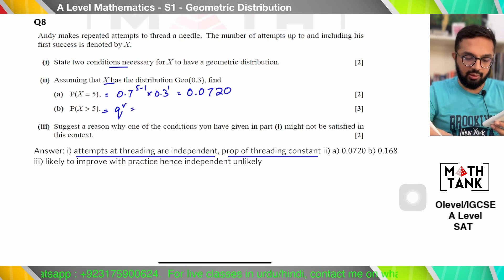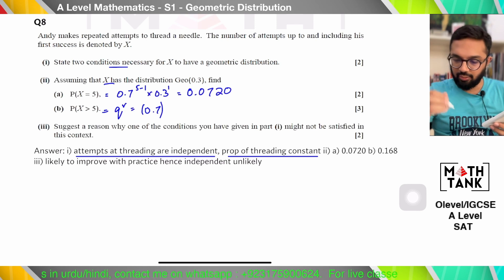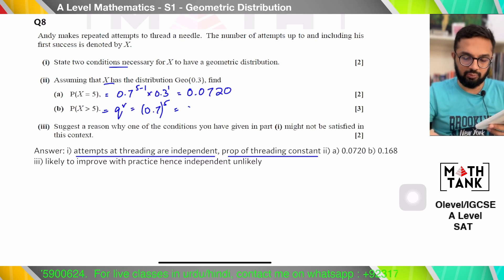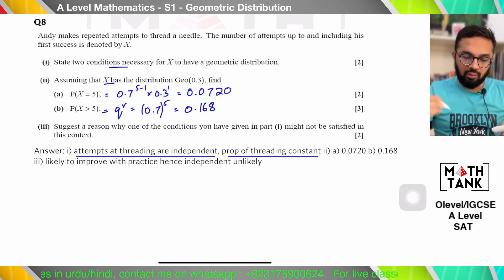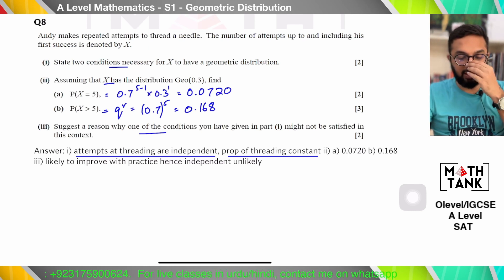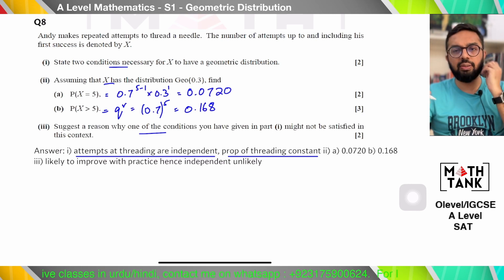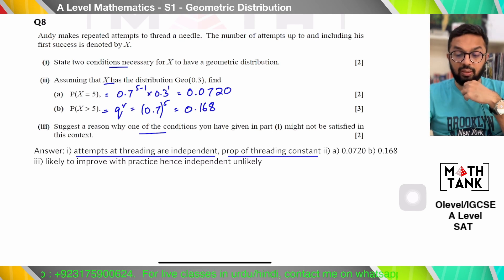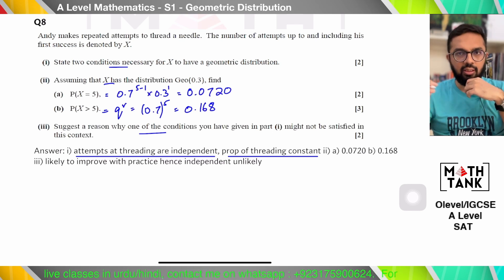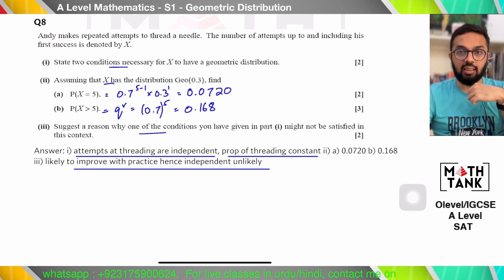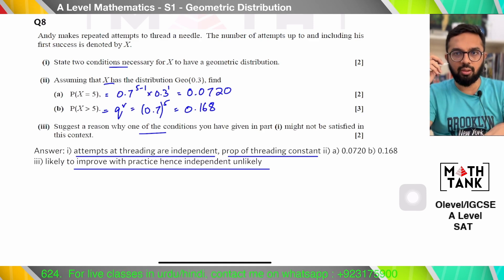P(X>5) = q^5. One condition given in part one might not be satisfied in this context because the next trial may be affected by the previous — you can get better with experience, or the needle or thread may get damaged. So independence is unlikely and the probability of success is therefore not constant.